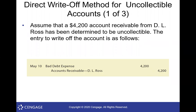Sometimes instead of writing it off, you negotiate a note — asking if they can pay within a year or make monthly payments. But sometimes you look at a business and you know there's no way they're going to pay you. With the direct write-off method, you debit bad debt expense and credit the accounts receivable — that's the process.